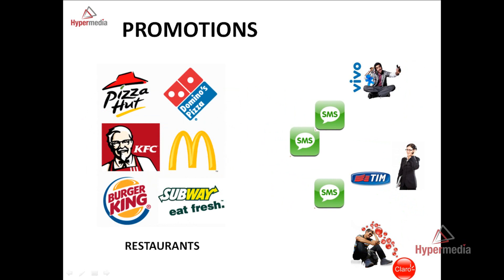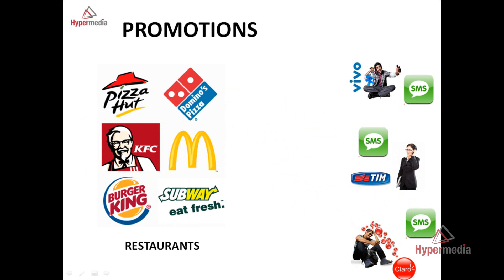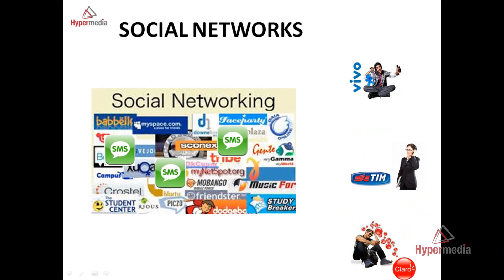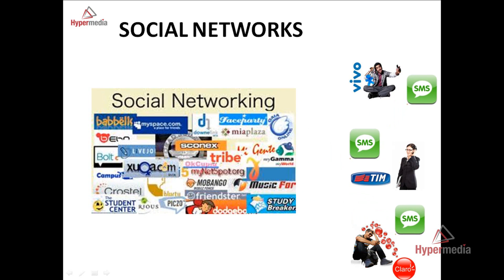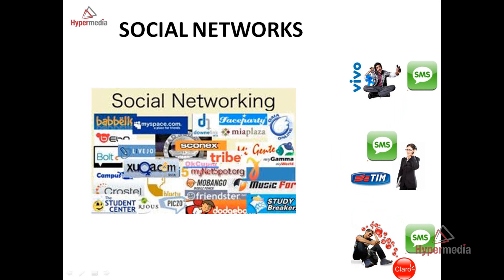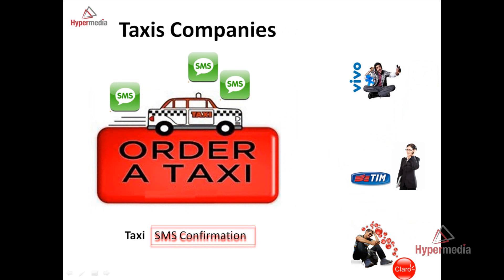You can use it for restaurants and food promotions. You can use it for social networks by sending SMS to interact with users, for announcements, parties, meetings, and more. You can also use it for taxi notifications — a taxi company can send a confirmation after receiving an order, including details like the name of the taxi driver, the taxi number, estimated arrival time, and amount to charge.